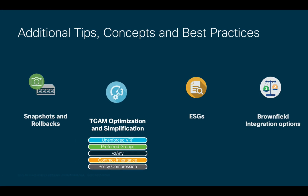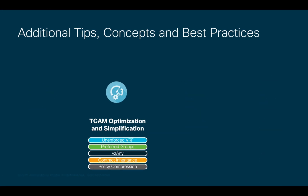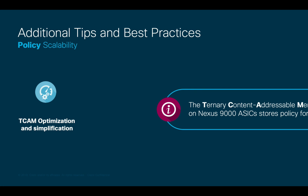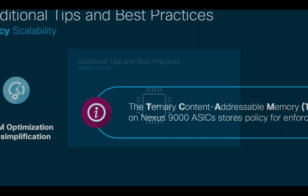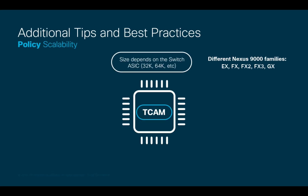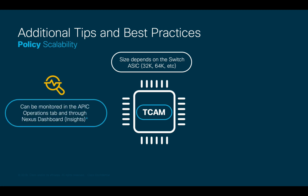In terms of resource and policy scalability, there are a few features that can help maximizing switch and TCAM resources, especially in large network environments. The TCAM is a specialized high-speed memory part of every Nexus 9000 switch, and it is where policy configuration is stored. The more contracts we have in our ACI configuration, the quicker the TCAM may fill out. TCAM sizes vary per Nexus 9000 model, and commonly provide plenty of space for most organizations' policy needs. However, as networks grow in size, keeping track of TCAM available space may become handy.